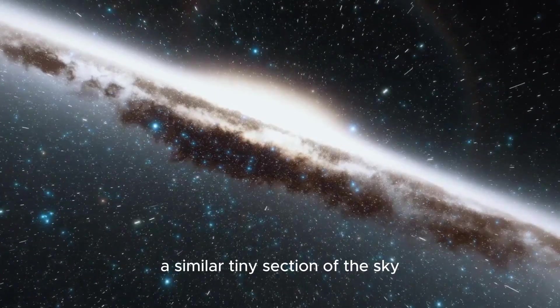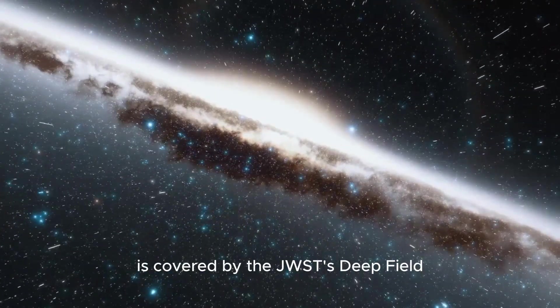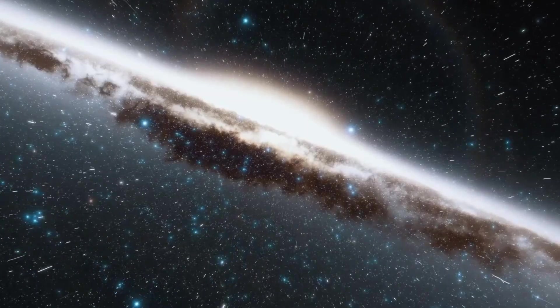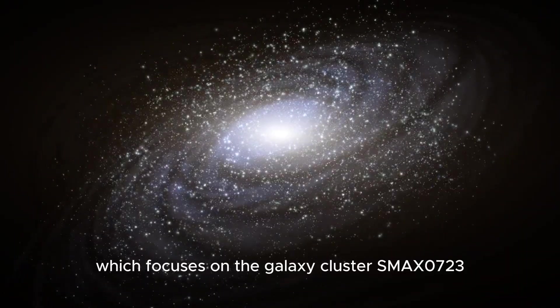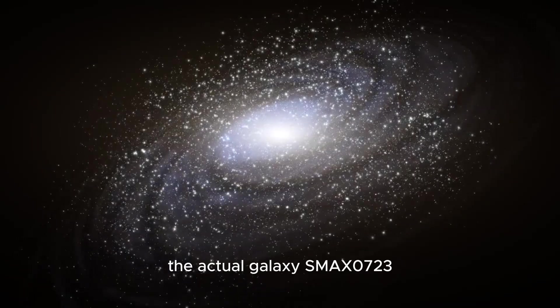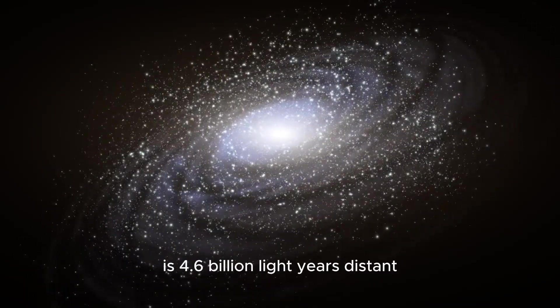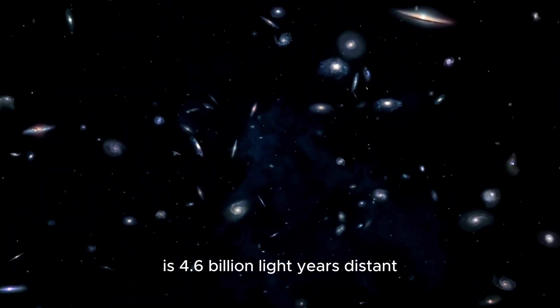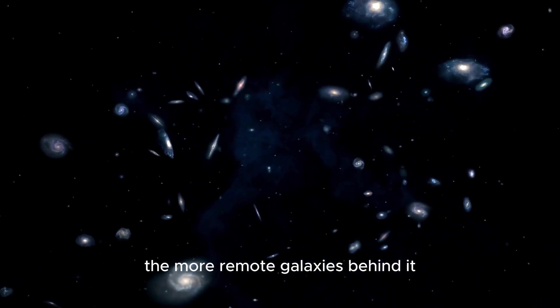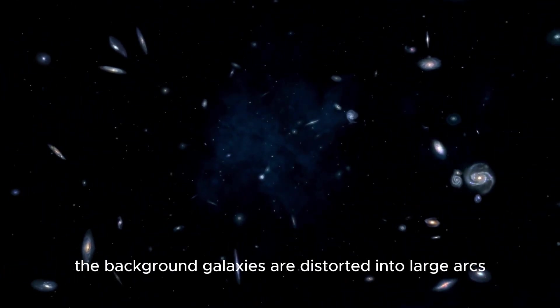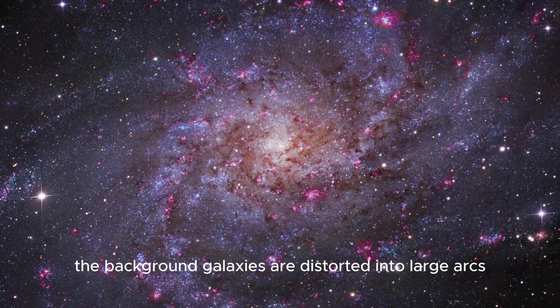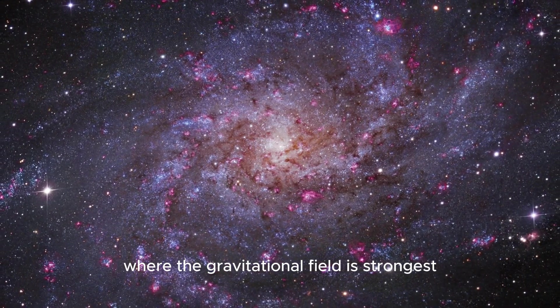A similar tiny section of the sky is covered by the JWST's deep field, which focuses on the galaxy cluster SMACS 0723. The actual galaxy SMACS 0723 is 4.6 billion light years distant. The more remote galaxies behind it are magnified by its strong gravitational field. The background galaxies are distorted into large arcs where the gravitational field is strongest.